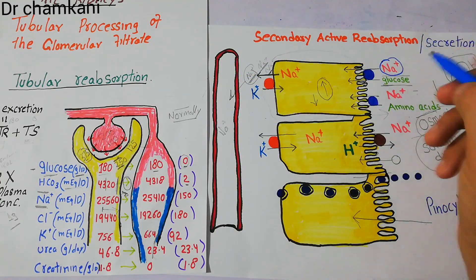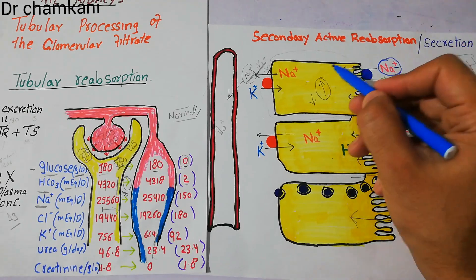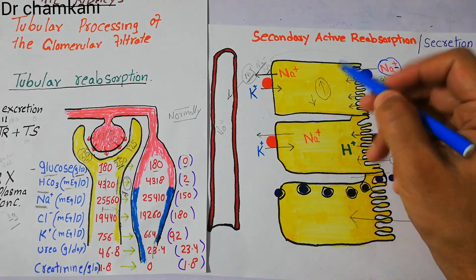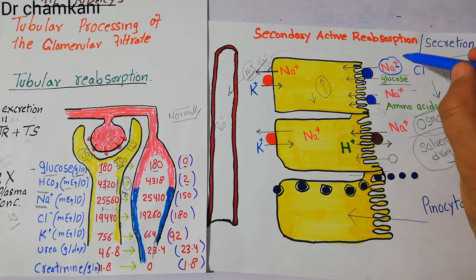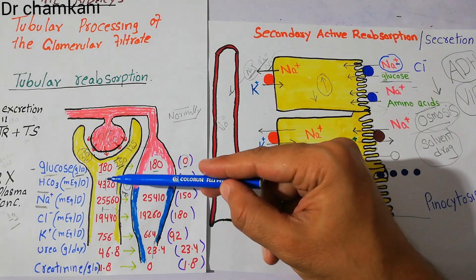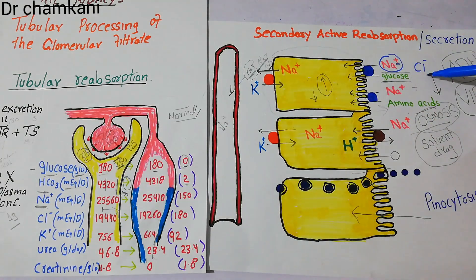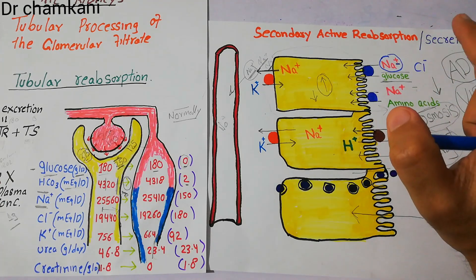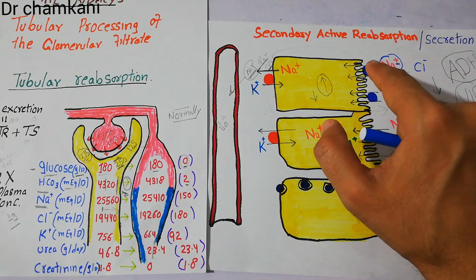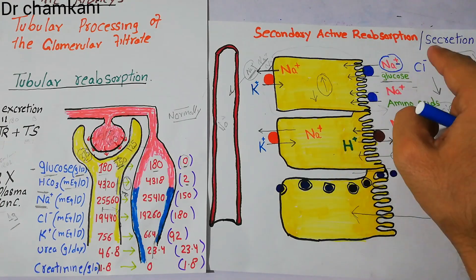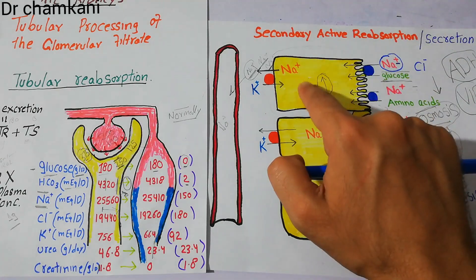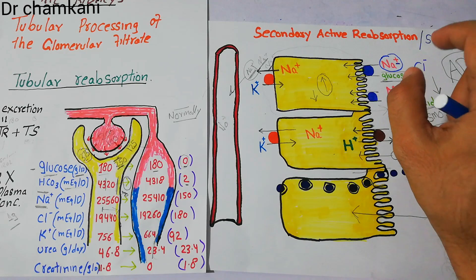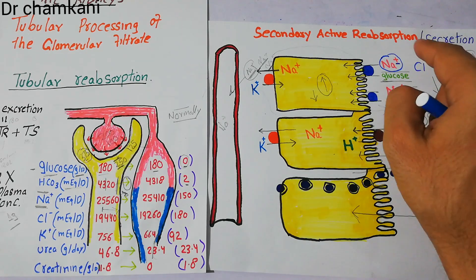The first way is through the electrical gradient. Sodium carries a positive charge, and when it gets entry into the cells, the positive charge in the proximal tubule decreases while the negative charge associated with chloride increases. This charge difference creates an electrical gradient, and this electrical gradient favors the reabsorption of chloride from the proximal tubule into the cells of the proximal tubule.